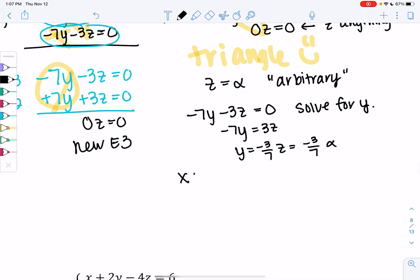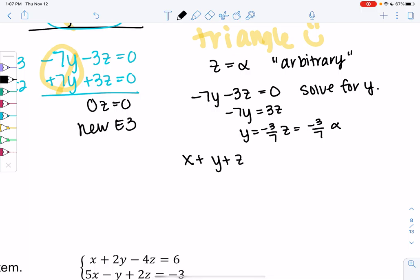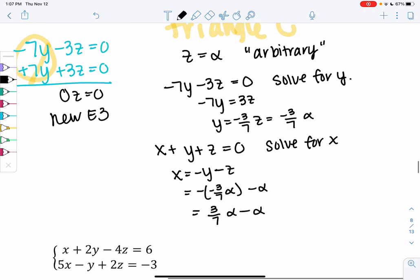Then we'll solve for x. x plus y plus z equals zero. x equals minus y minus z. We'll plug in alpha and negative 3/7 alpha. Negative times negative 3/7 alpha is y minus alpha, so we get 3/7 alpha minus alpha, which is 3/7 minus 7/7, both alpha, so negative 4/7 alpha.